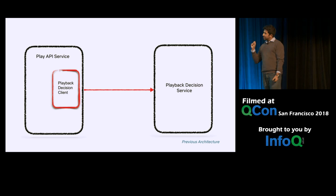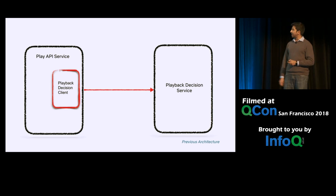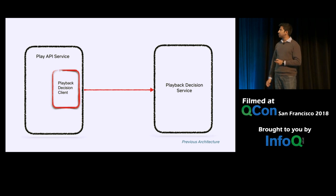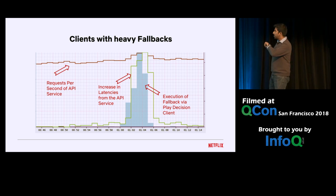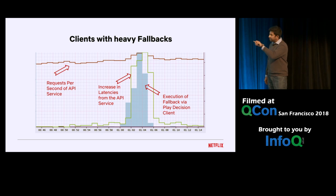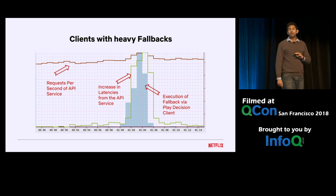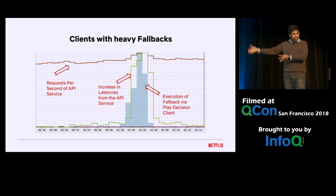We have another form of coupling with respect to client libraries. The play API service talked to the playback decision service via the playback decision client. Whenever the playback decision service was unavailable, it used a fallback from within the client to improve reliability. However, in one particular instance, when the playback decision service was down, it resulted in fallback execution from within the play API service — but the latencies of the API service went through the roof. The fallback was so heavy and CPU-intensive that, even though it provided reliability for the playback decision service, the availability of the playback API service was still impacted and Netflix was still down.